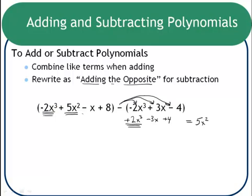Then the x's. I've got a negative 1x and what amounted to negative 3x here. So a negative 1 and a negative 3 add together to give you negative 4x's.